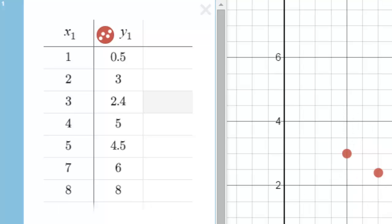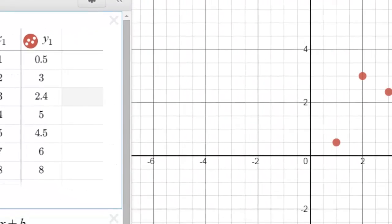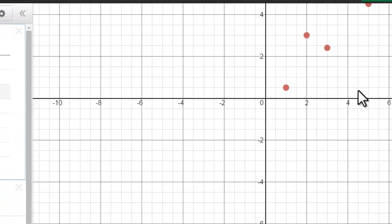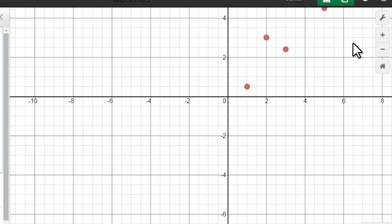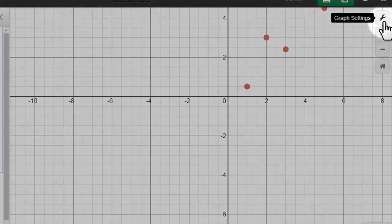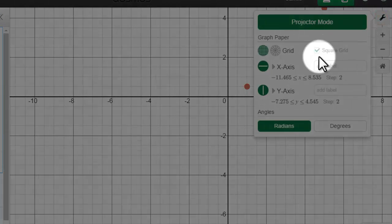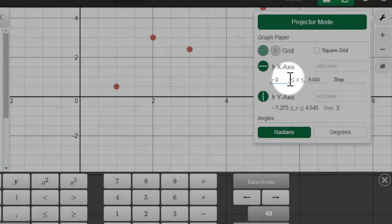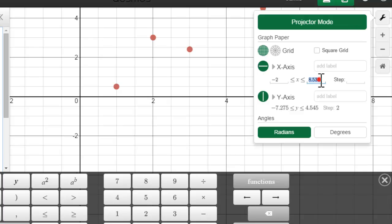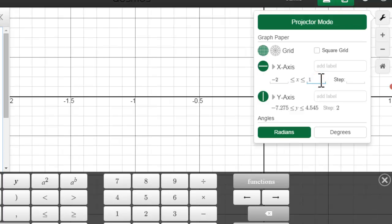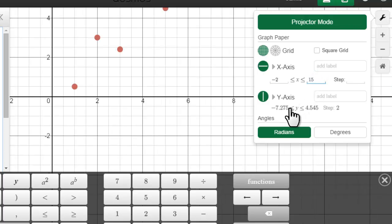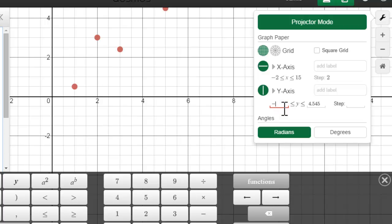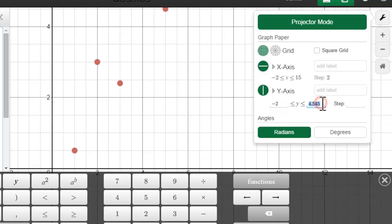You might have different window settings than I do, so you might see a slightly different part of the scatterplot. Let's go into graph settings, click on the wrench, and change the scale on our axis to something that's going to be a little bit more friendly for viewing our data. I'm going to change my x-axis to go from negative 2 to 15 and I'm going to change my y-axis to go from negative 2 also to 15.